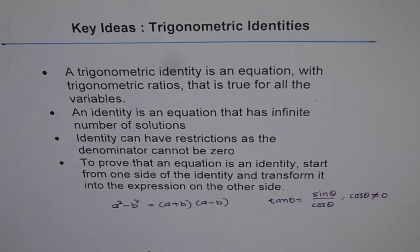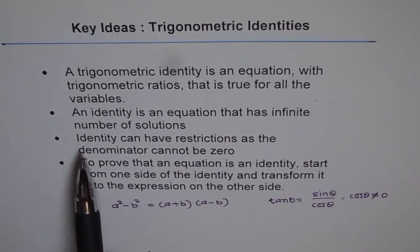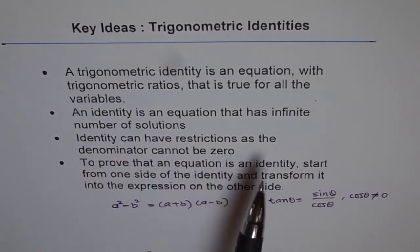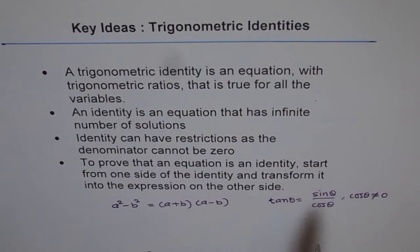Identity can have restrictions as the denominator cannot be zero. This is the point which you need to understand: it is not blanket that all real numbers, there are some restrictions just as you do in rational functions.